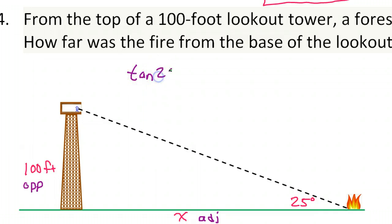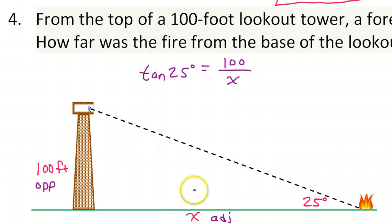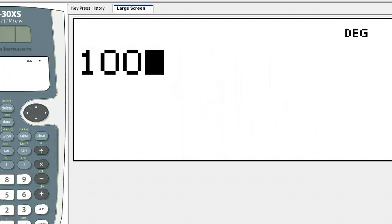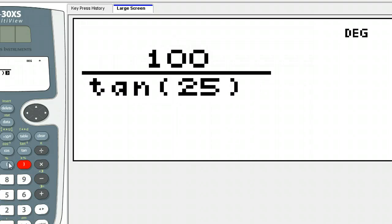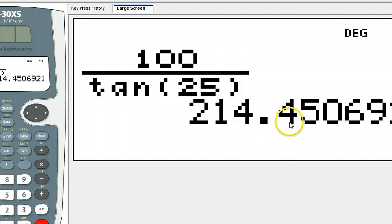So we will say the tangent of 25 degrees is equal to opposite over adjacent, 100 over x. Now you should use the shortcut for a problem like this. Anytime you have the variable in the denominator, the easiest thing to do is to reverse the denominator with the quantity that's out here by itself. So if you do that, you're going to immediately get x by itself. So x is equal to 100 over the tangent of 25 degrees. And you can just go ahead and put this in your calculator. 100 over tangent of 25. So that's 214.5. Got to round up.